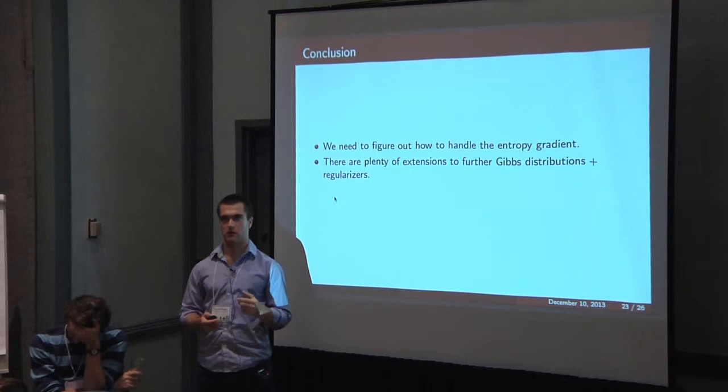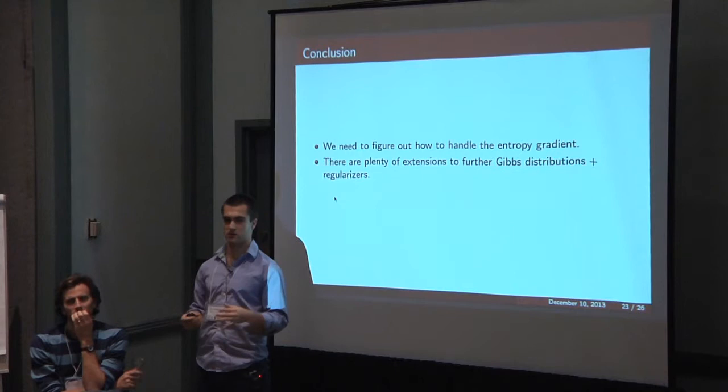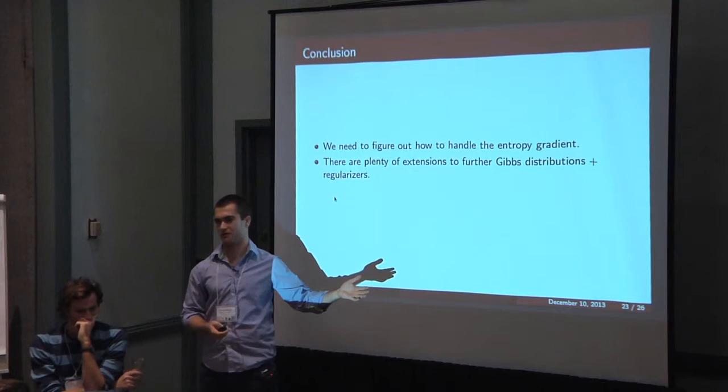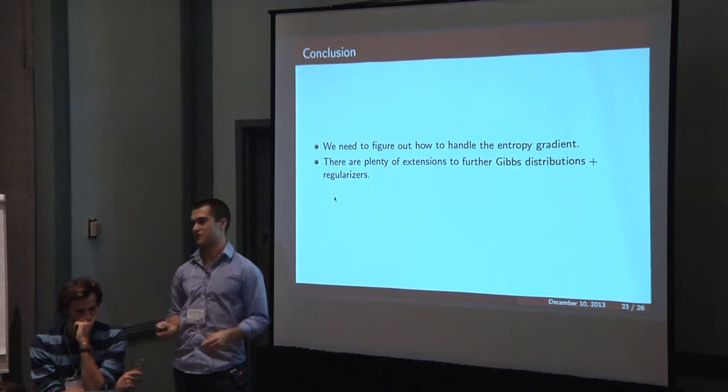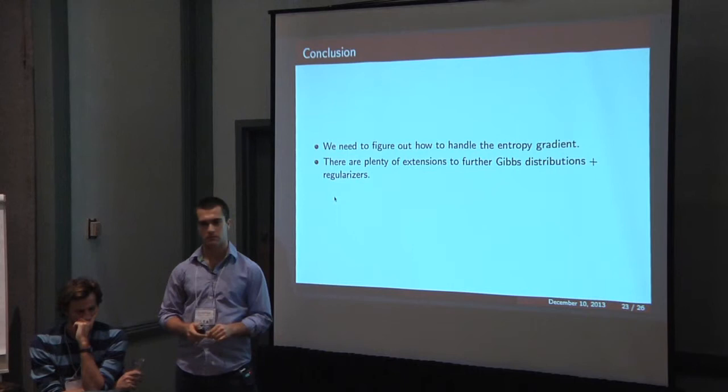In terms of the matching example, there is work showing that the Bethe entropy on matchings is very high quality and convex. But there's also work that shows that the sum product algorithm is linearly convergent for that problem. So it doesn't sound like it's actually that hard of a problem to approximate.